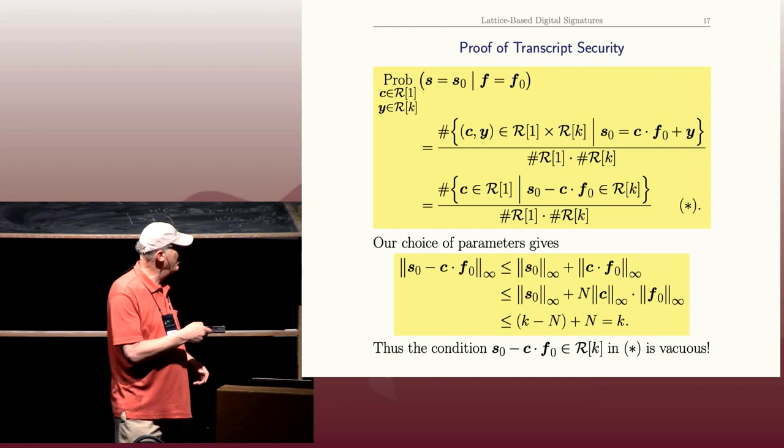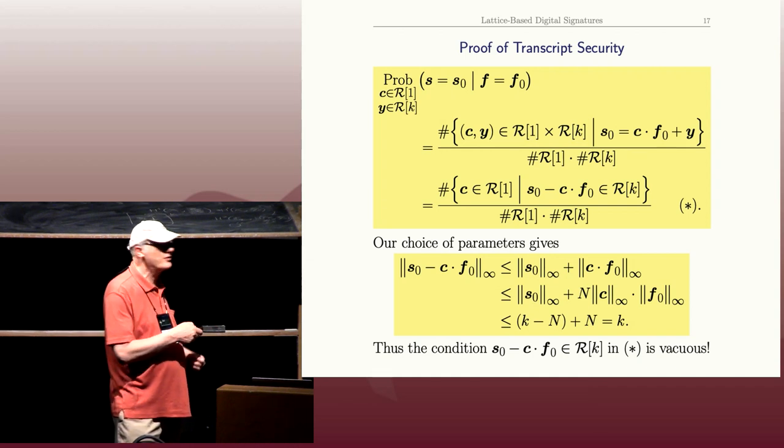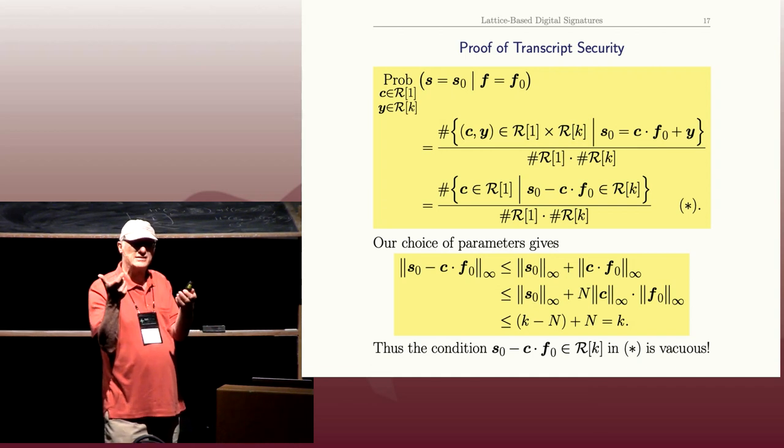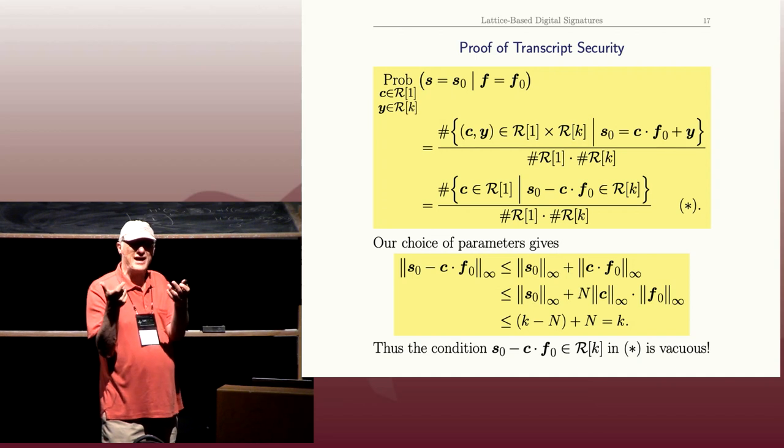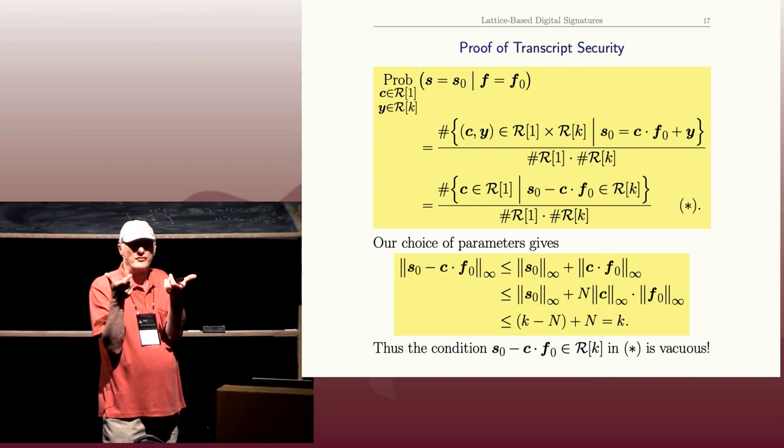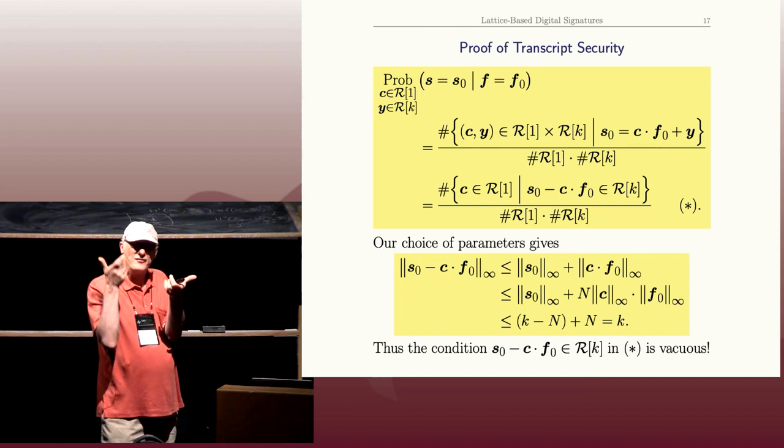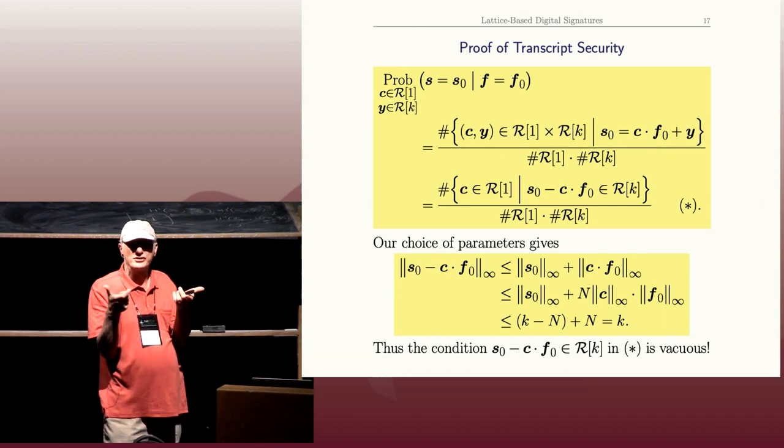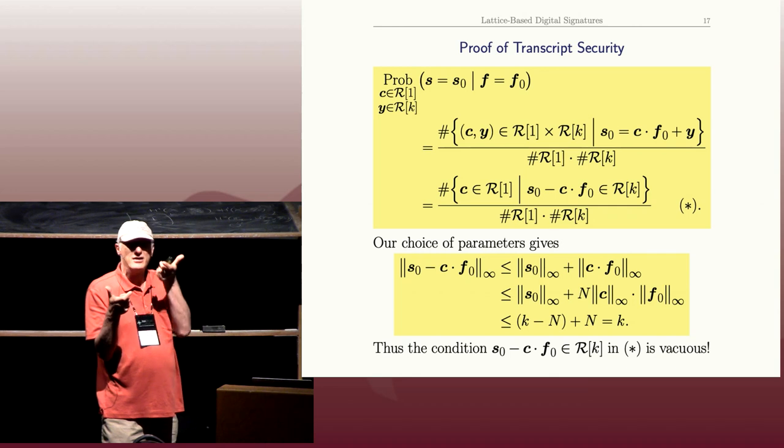And a coefficient of the product is essentially you're taking a vector of coefficients and taking the dot product of a vector of coefficients. So if I give you a vector, all of whose coefficients are 0, 1, minus 1, and another vector with 0, 1, minus 1 coefficients,